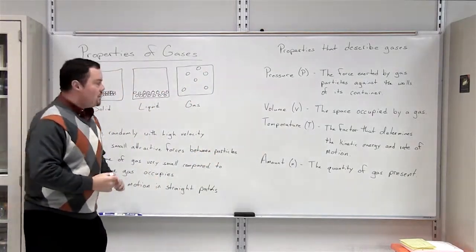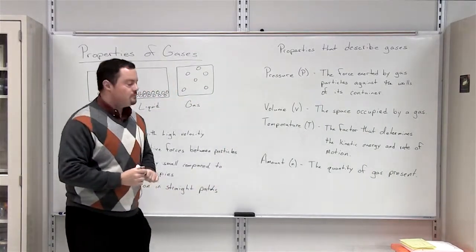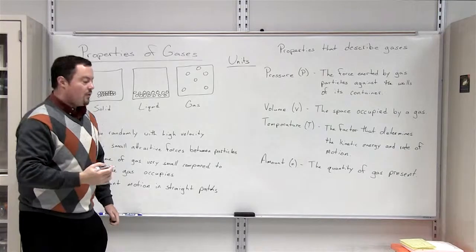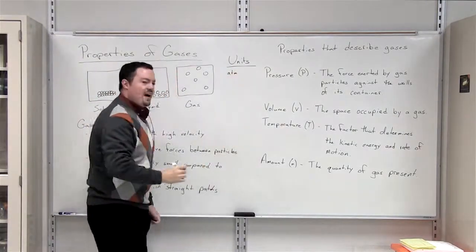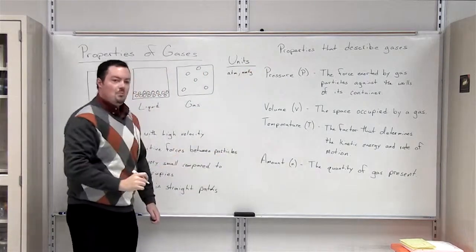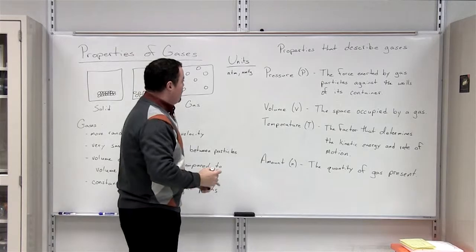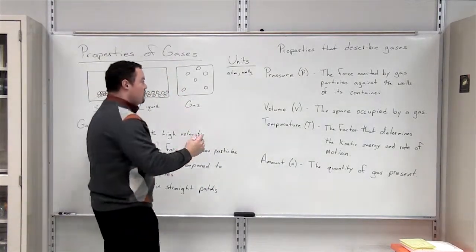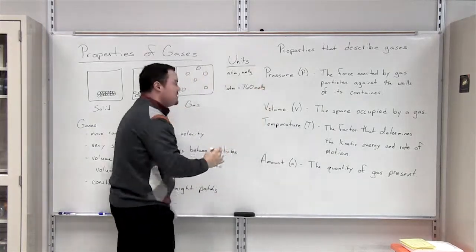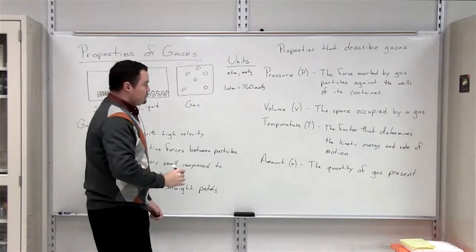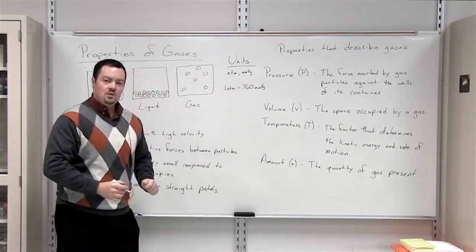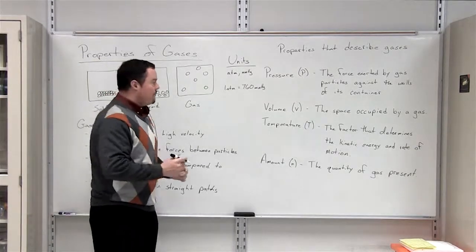Now when we're talking about pressure, let's also go over some of the units that we use to measure pressure. One unit that you'll come across is an atmosphere. You'll also see mmHg, which is millimeters of mercury. One atmosphere is equal to seven hundred and sixty millimeters of mercury. In case you ever have to convert from one unit to another in terms of pressure, you will use this equality when converting between atmospheres and millimeters of mercury.